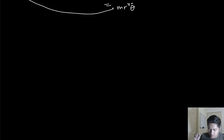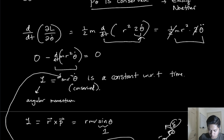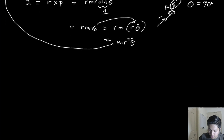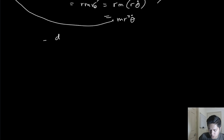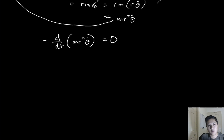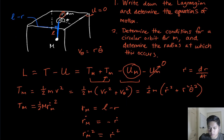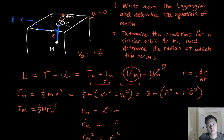So we've obtained both equations of motion: mr·θ-dot² − Mg = (M + m)·r-double-dot, and d/dt(m·r²·θ-dot) = 0, confirming angular momentum conservation. That's the first part done — we found the Lagrangian and derived the equations of motion. Next time, we'll determine the conditions for a circular orbit for little m and find the radius at which that occurs. Stay tuned.